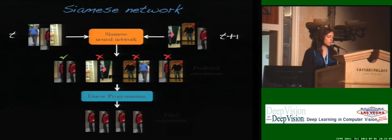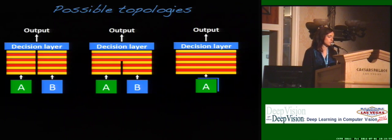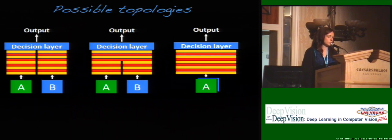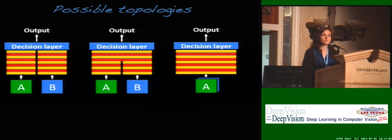Once we have that, we feed these scores into our linear programming or network flow tracking to obtain the final trajectories. We've also explored possible topologies from pure Siamese networks to a simple classification network — if you want to know more details, come to our poster.